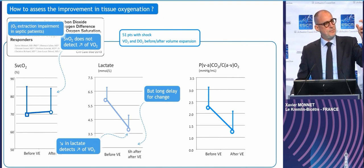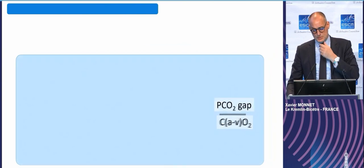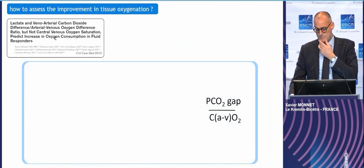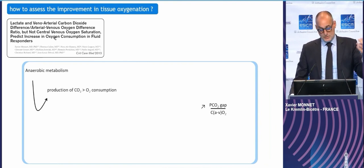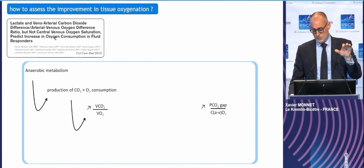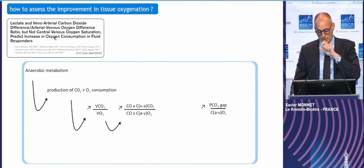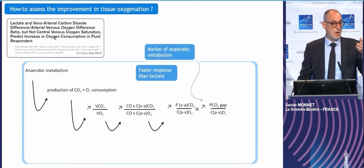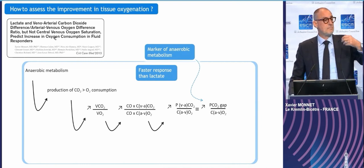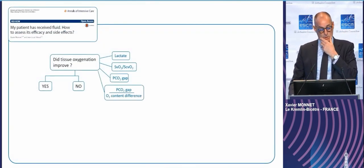This might be the ratio of the pCO2 gap over the arteriovenous oxygen content difference. This index is derived from the pCO2 gap described by Jean-Louis Tauboul — it's an estimate of the respiratory quotient. In case of anaerobic metabolism, VCO2 is higher than VO2. It is less validated than lactate, but it is a marker of tissue hypoxia and anaerobic metabolism that reacts faster than lactate — perhaps a solution to estimate the effects of our fluid bolus.